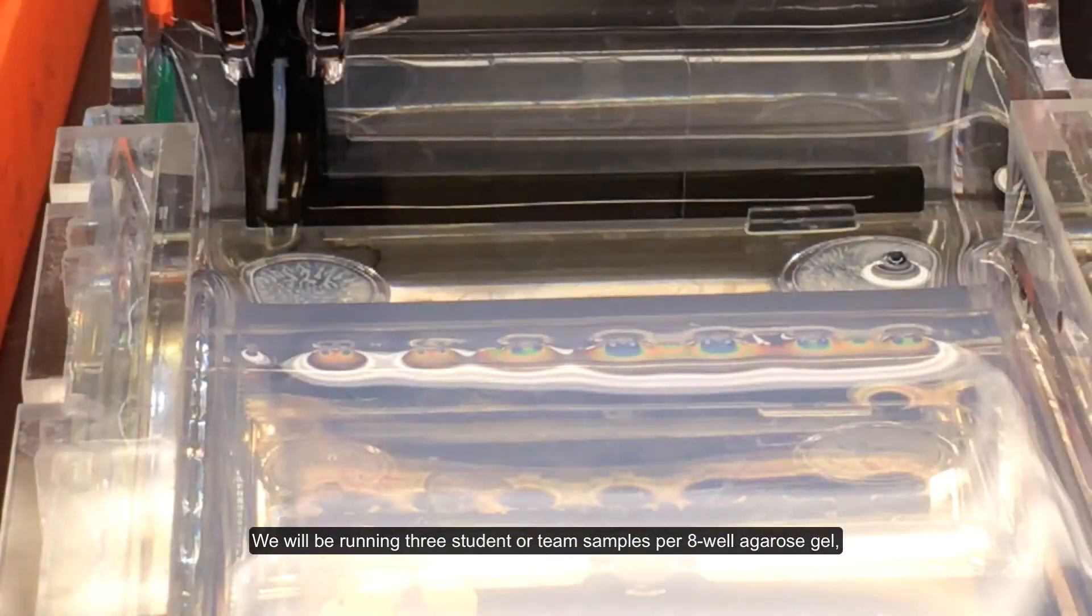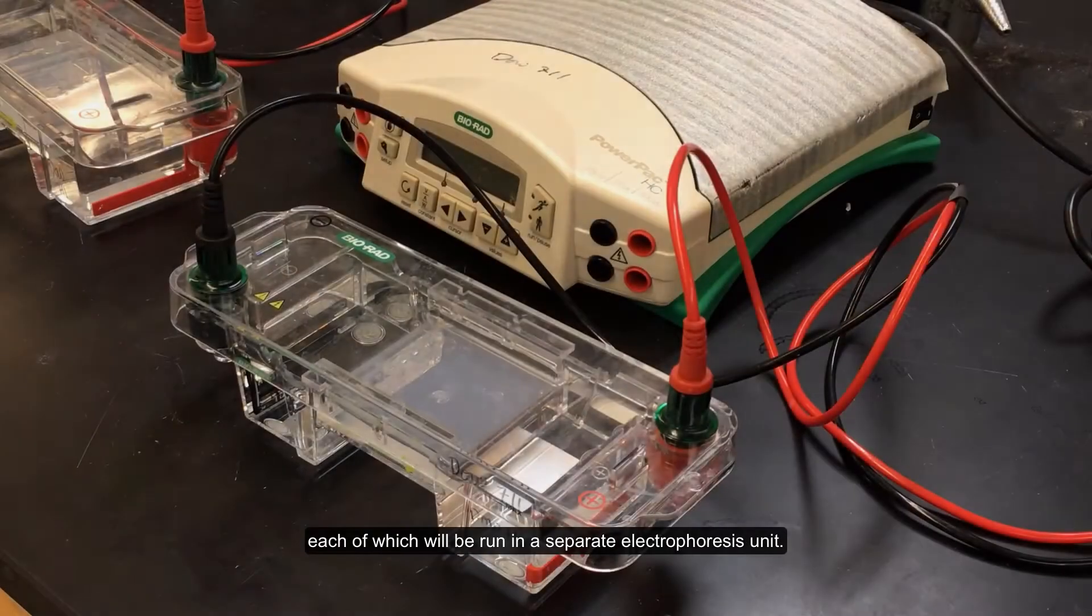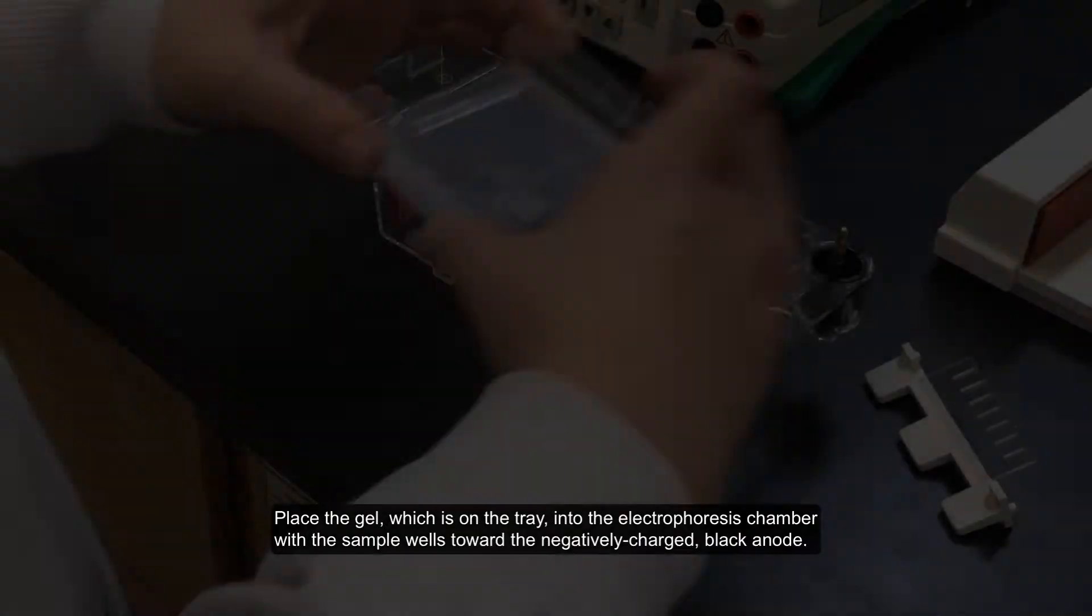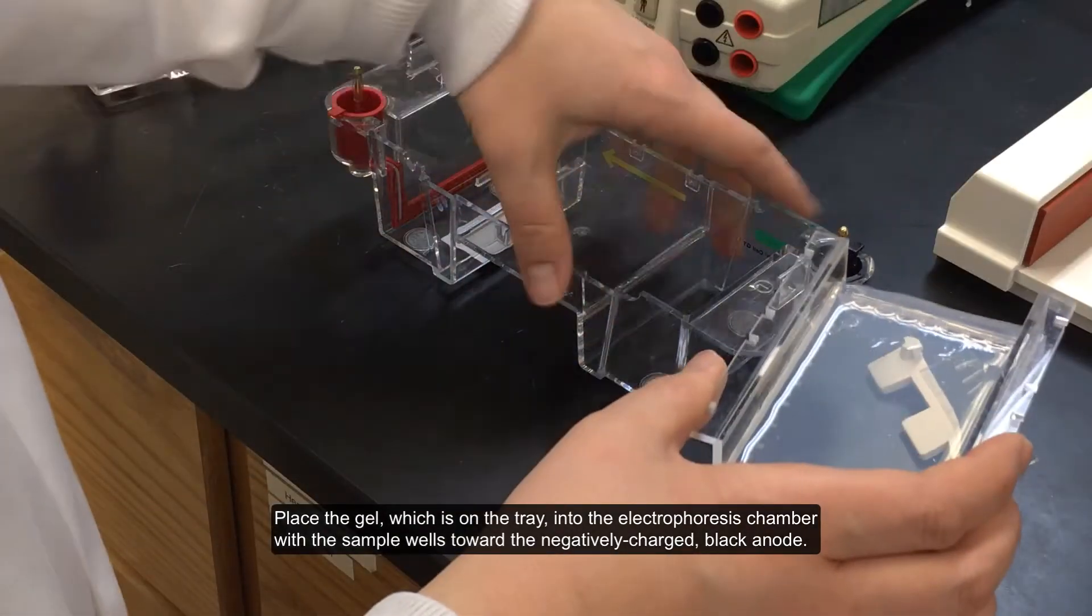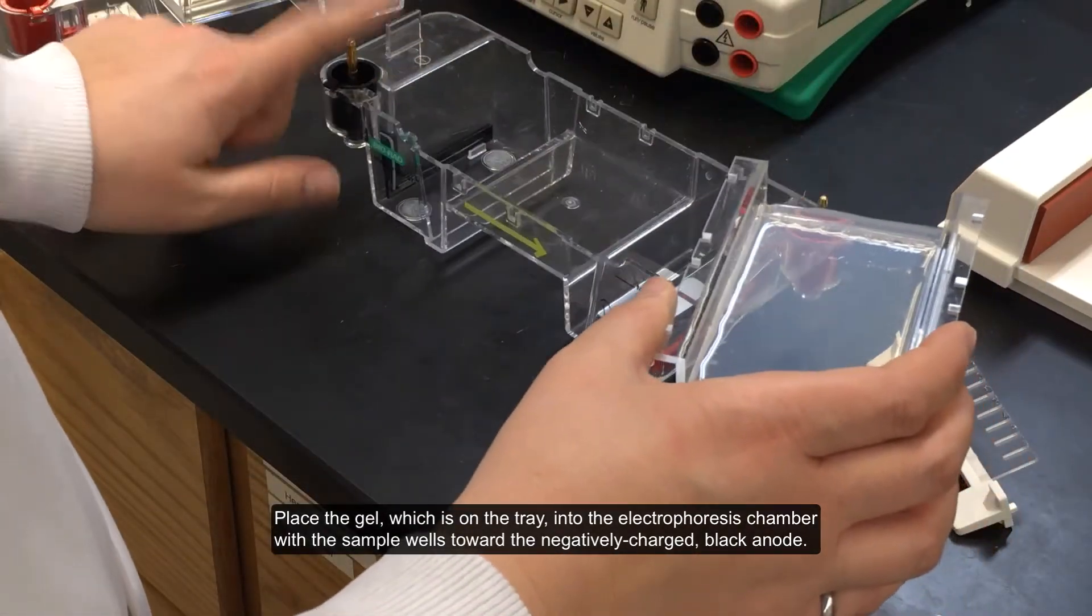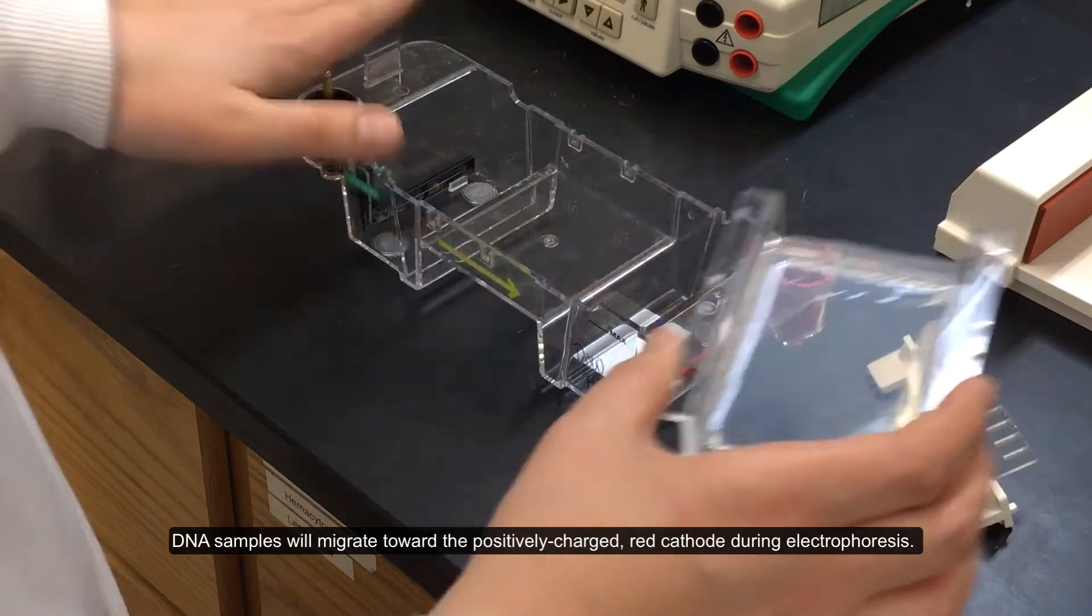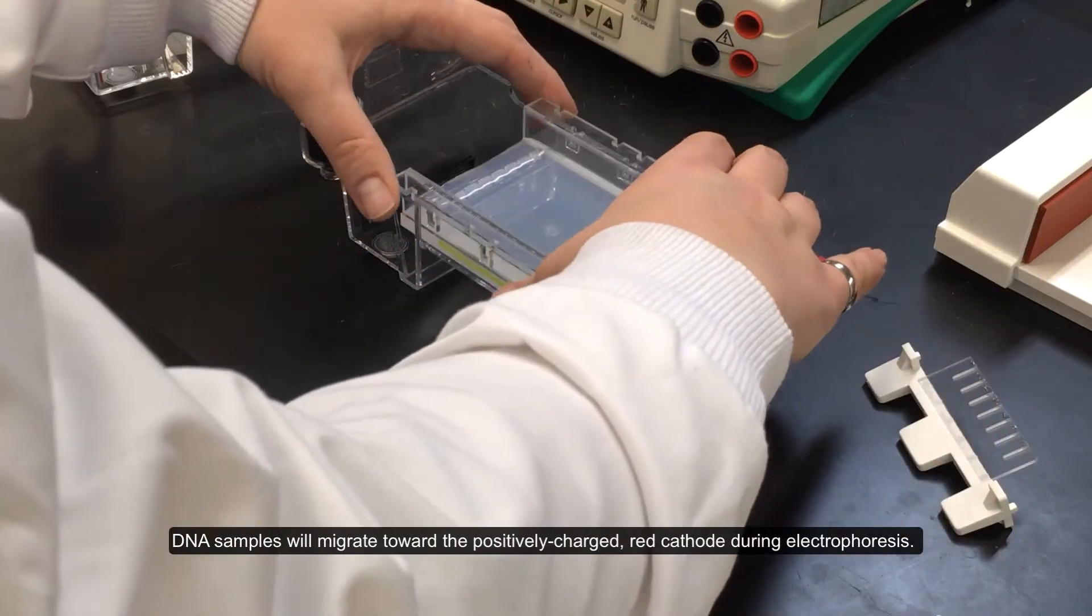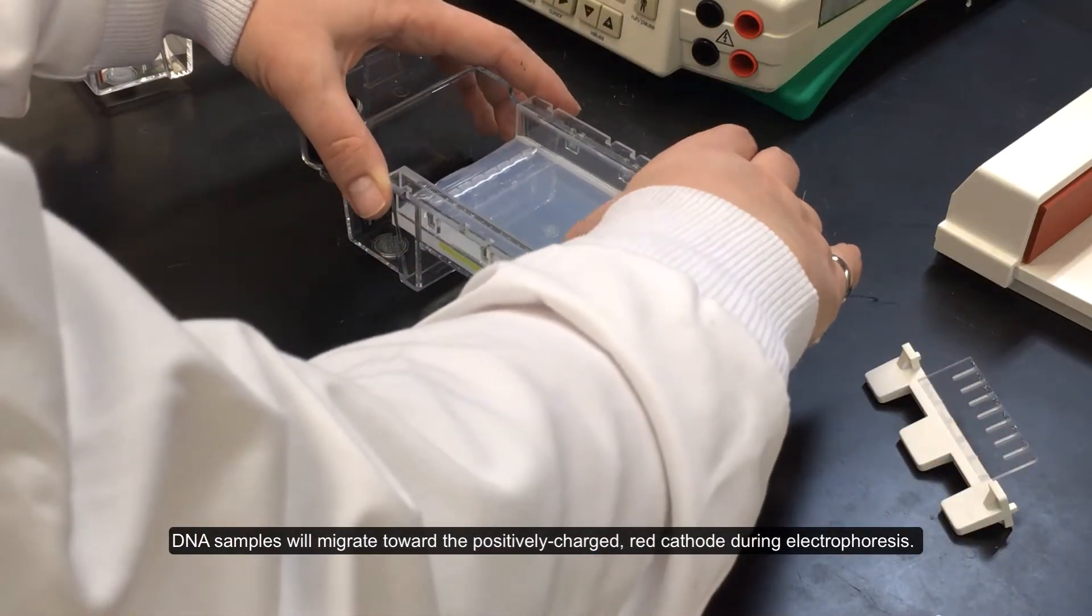We will be running three student or team samples per 8-well agarose gel, each of which will be run in a separate electrophoresis unit. Place the gel, which is on the tray, into the electrophoresis chamber, with the sample wells toward the negatively charged black anode. DNA samples will migrate toward the positively charged red cathode during electrophoresis.